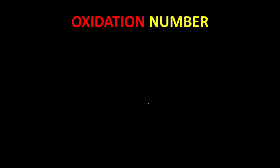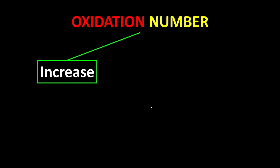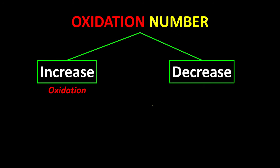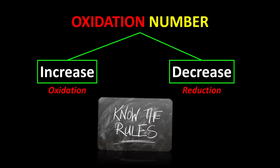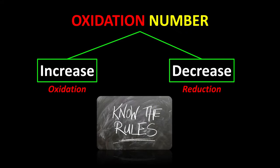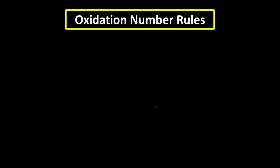With this number, when the number increases, we say that a substance undergoes oxidation. When the number decreases, as you can guess, decreases means reducing, so it undergoes reduction. But before we use these numbers, we need to know the rules, so we need to memorize some of the rules.